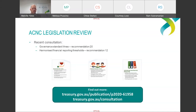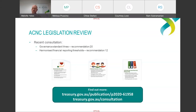In terms of assurance requirements for each tier under the proposals, they would remain as follows: small organizations would need to provide an annual information statement; medium-sized charities would need to provide the annual information statement plus financial statements that have been reviewed as a minimum; and large organizations would need to prepare an annual information statement as well as audited financial statements.